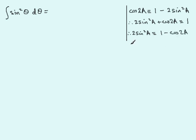And then finally, by dividing by 2, halving both sides, we have that sine squared a is identical to a half of 1 minus cos2a.